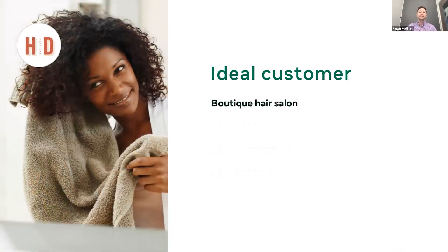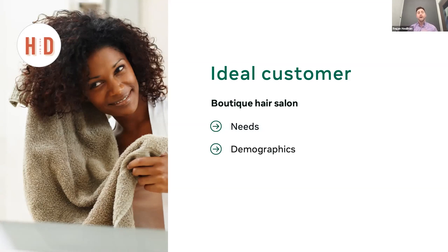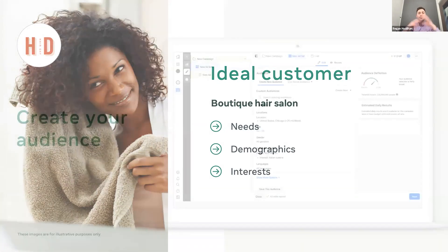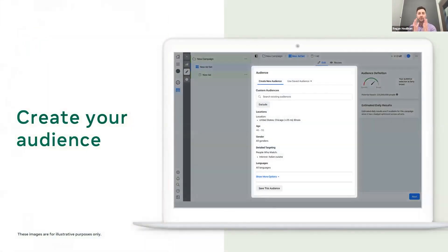The third business is Hair Day, a boutique hair salon. The needs of their customers are convenient and affordable haircuts. From a demographics point of view, they're after women aged 35 to 50 located in central Melbourne. And from an interest point of view, they seek a salon that takes reservations for their busy schedule. Once you've created your audience, here is what it will look like in your Ads Manager — I'll pause there so you can have a quick look.